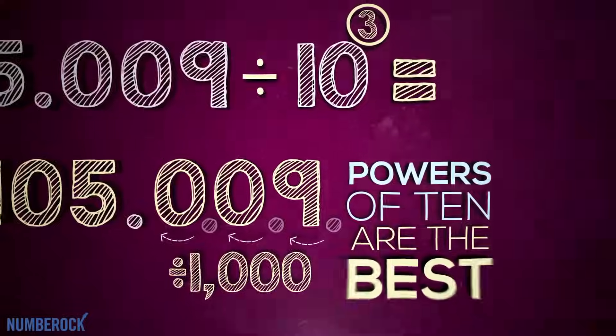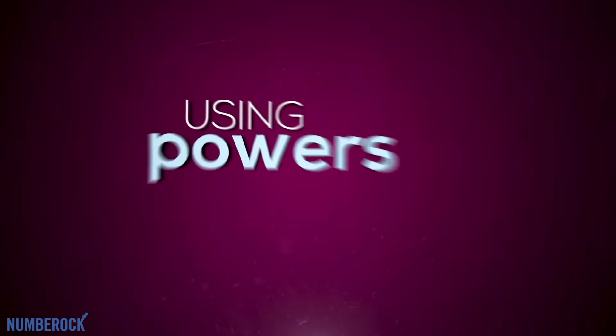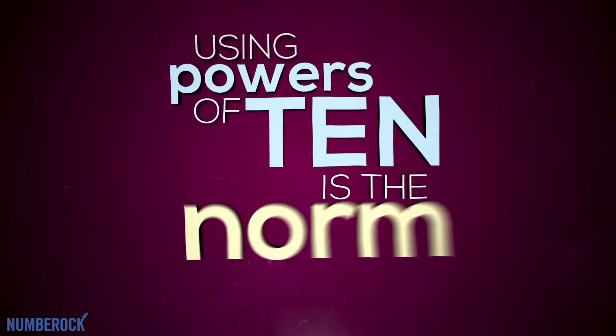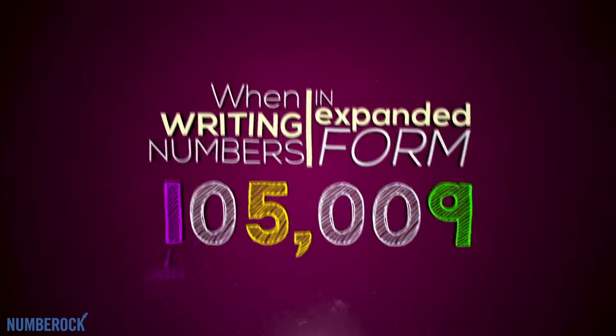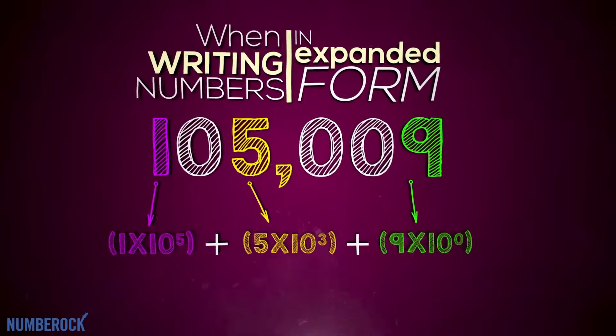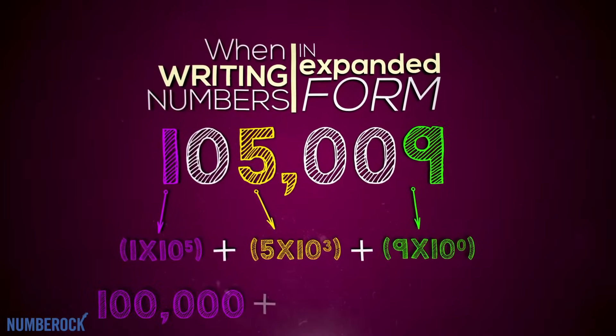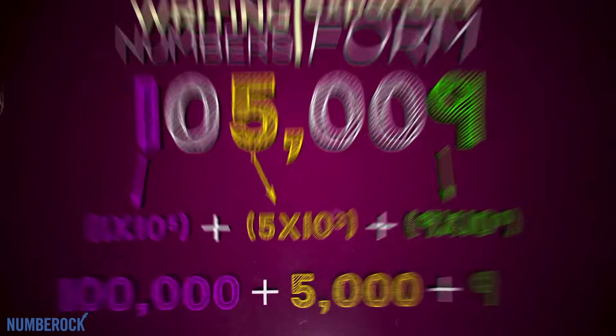Powers of ten are the best. Using powers of ten as the norm when writing numbers in expanded form — split the values apart bit by bit to see the value of every digit.